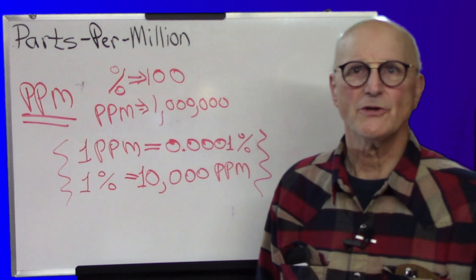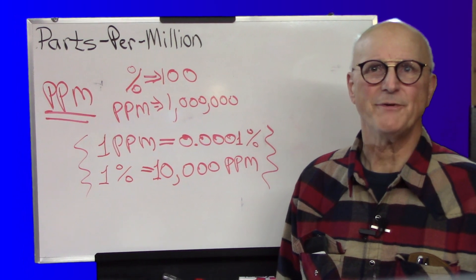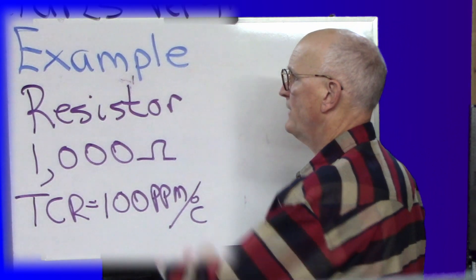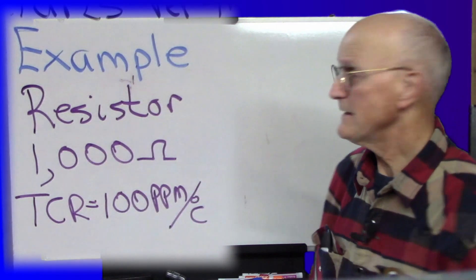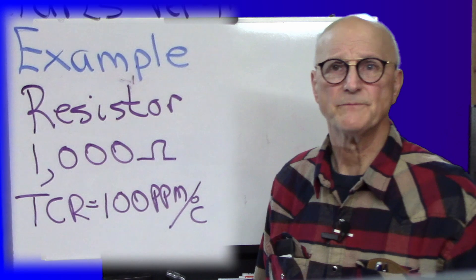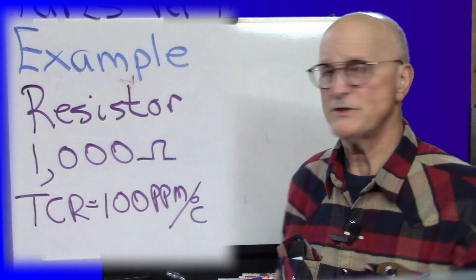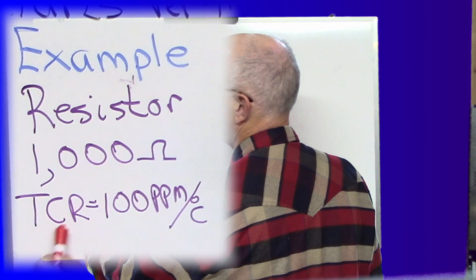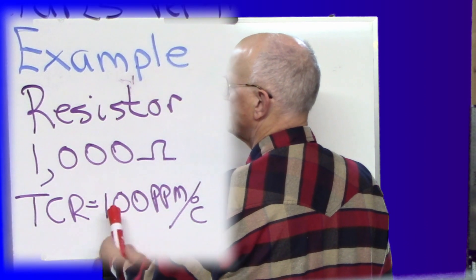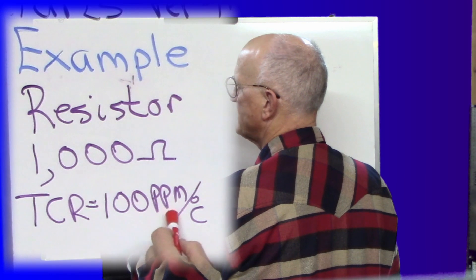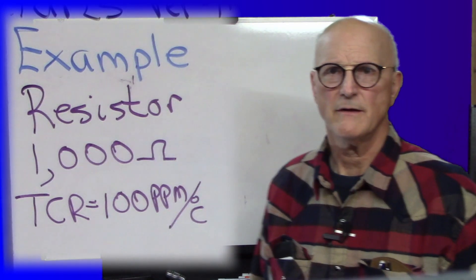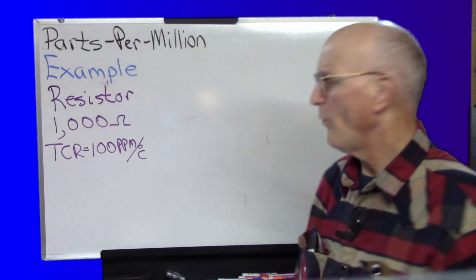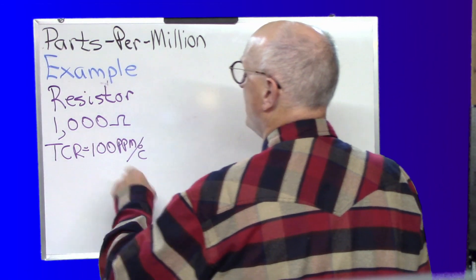So let's take a look at a practical example. So we have in our practical example a resistor. Its value is 1,000 ohms. And we look at the datasheet and we find out that its temperature coefficient of resistance is 100 parts per million per degree C. Well, that's a little confusing. Well, let's begin here.